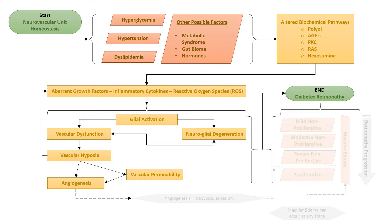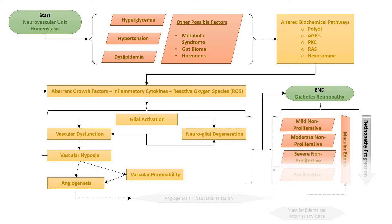Hyperglycemia promotes leukocyte accumulation in the retinal vessels, causing ischemia, vascular leakage, and tissue hypoxia. New vessels are formed in an attempt to restore retinal equilibrium. This cascade of neurovascular dysfunction is associated with clinical stages of retinopathy progression.